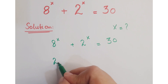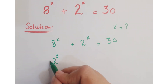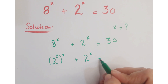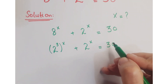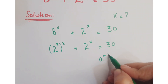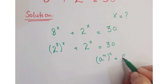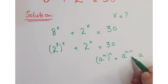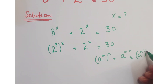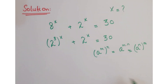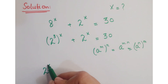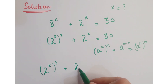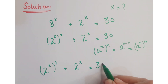You can write 8 as a power of 2, so the equation becomes 2 cubed to the power x plus 2 to the power x equals 30. As you know, a to the power m, whole to the power n, can be written as a to the power m into n. So you can write this as 2 to the power x, whole to the power 3, plus 2 to the power x equals 30.